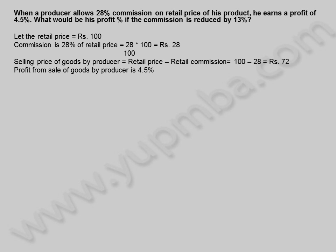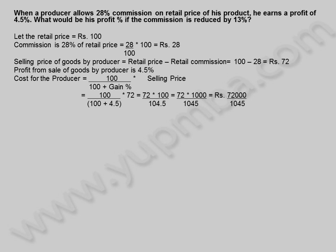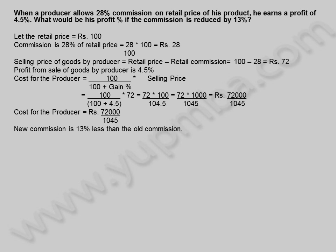Profit from sale of goods by producer is 4.5%. Cost for the producer = 100/(100 + 4.5) × 72 = 72 × 1000/1045 = 72000/1045 rupees.